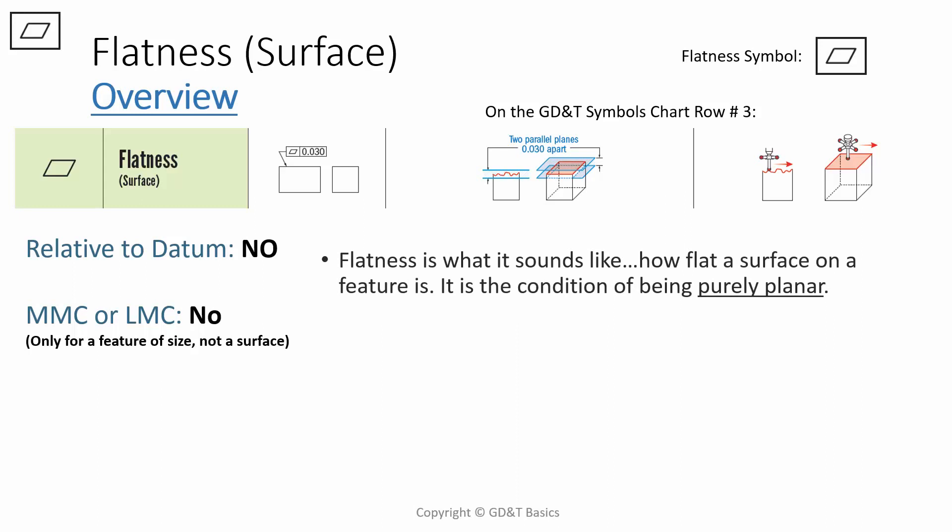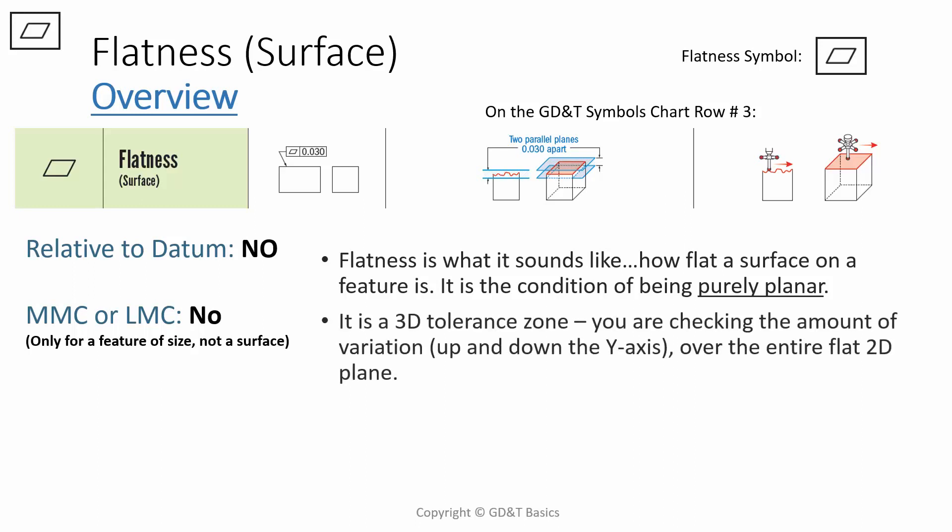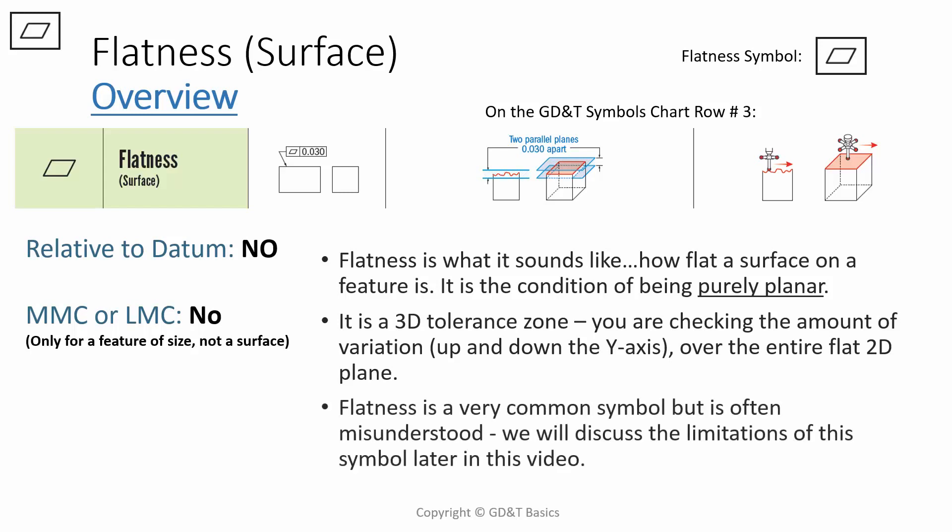Flatness is exactly what it sounds like: how flat a surface on a feature is. It's the condition of being purely planar. It's a 3D tolerance zone. You're checking the amount of variation, up and down in the y axis, over the entire flat 2D plane. Flatness is a very common symbol but often misunderstood. We'll discuss the limitations of this symbol later in this video.